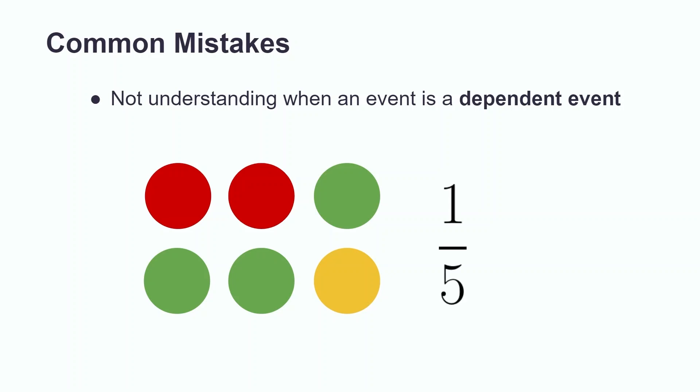Now, let's imagine that we select the yellow ball on our first try. The probability of selecting the yellow ball on the second try is now 0. Because our random circumstances in this event depend on each other, we know this is a dependent event.